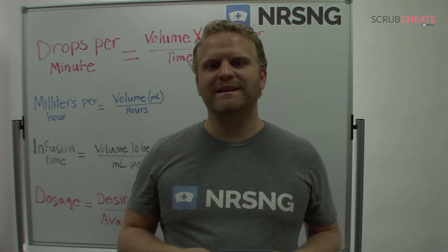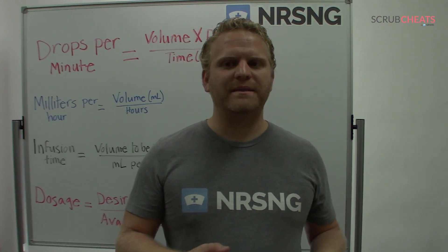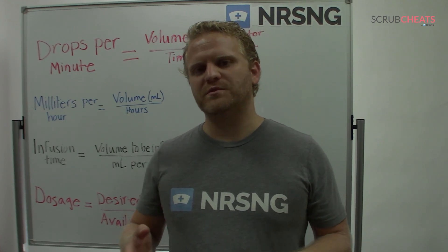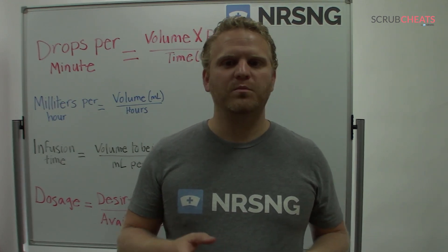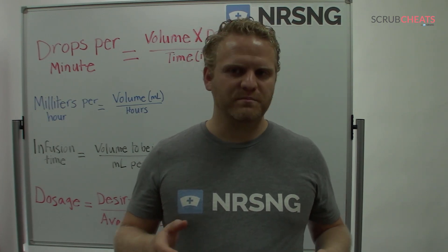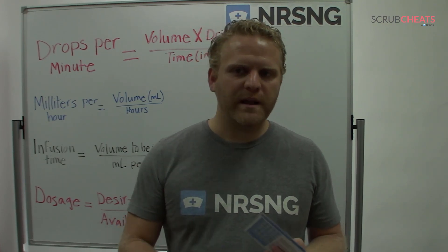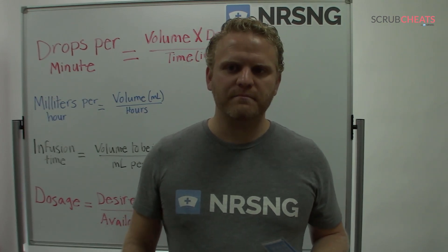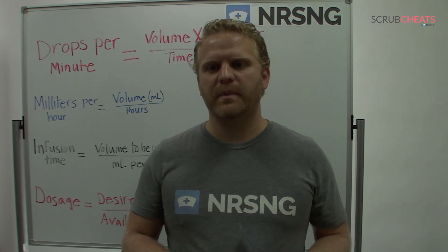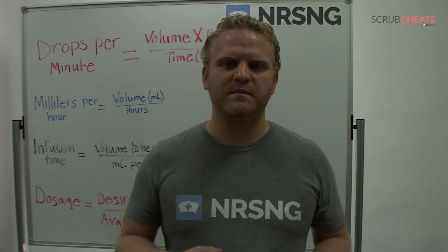Dosage calculations are something that every nursing student either loves or dreads. We all have to pass math exams every semester — it's either easy points or makes you a nervous wreck. If you're the second type, this explanation should help, because at NRSNG we believe nursing school shouldn't be so hard. There are four main types of questions: drip rate or drops per minute, total infusion time, dosage, and IV pump rate — always in milliliters per hour.